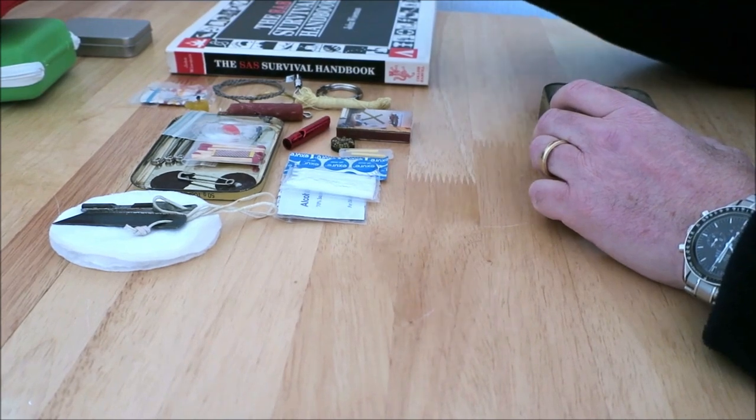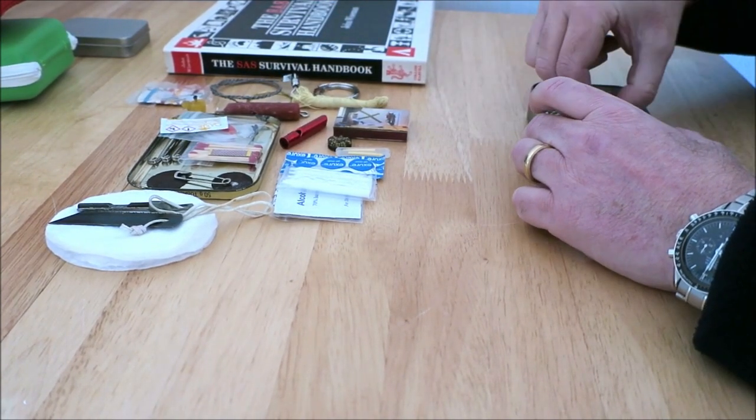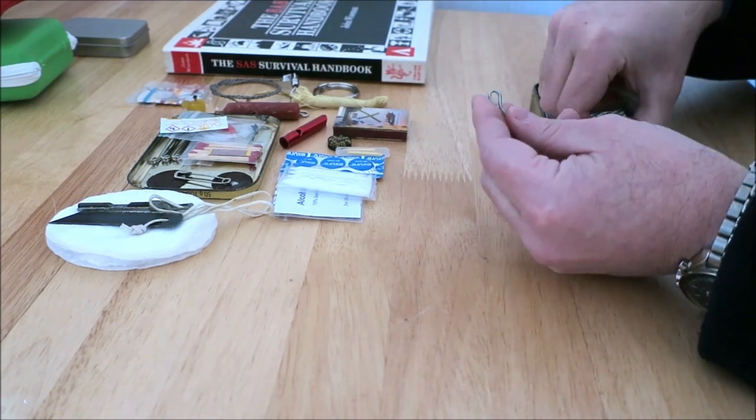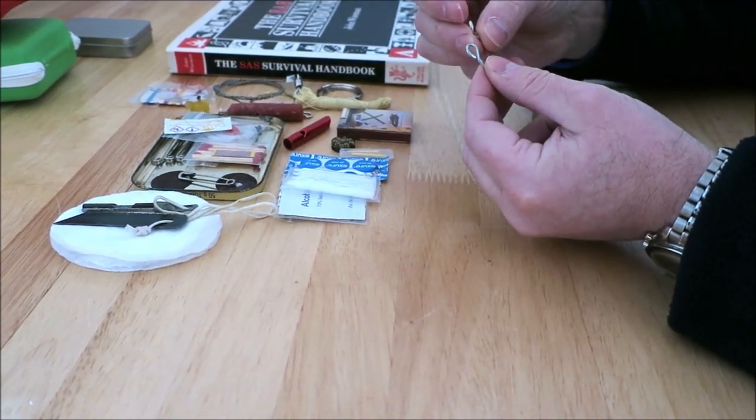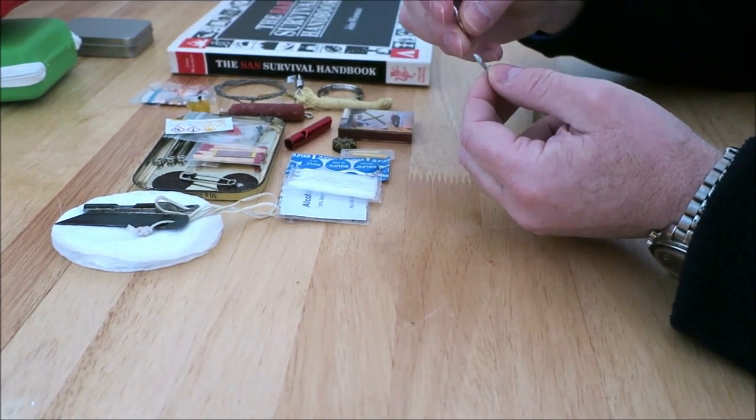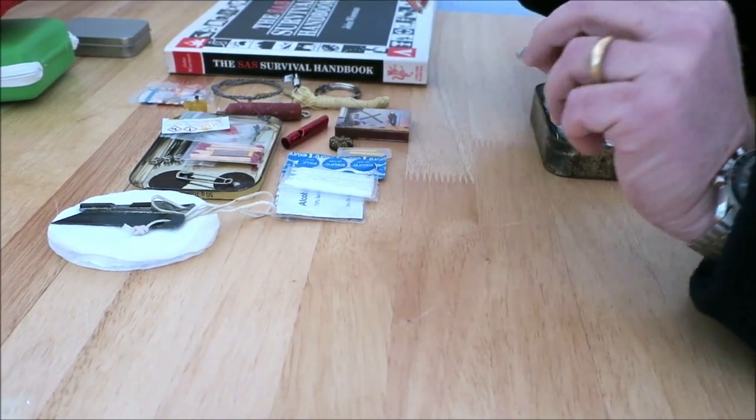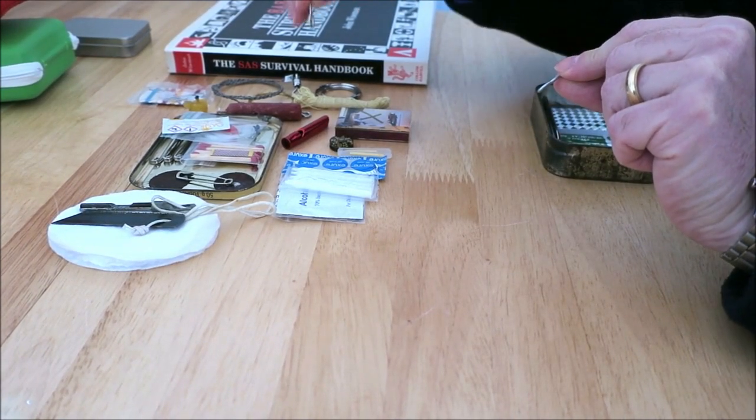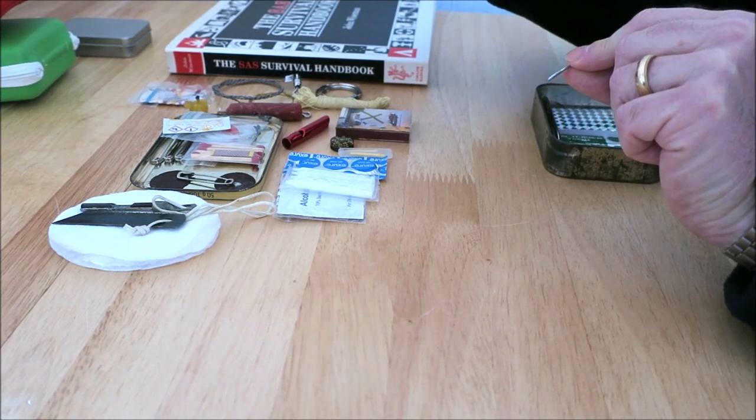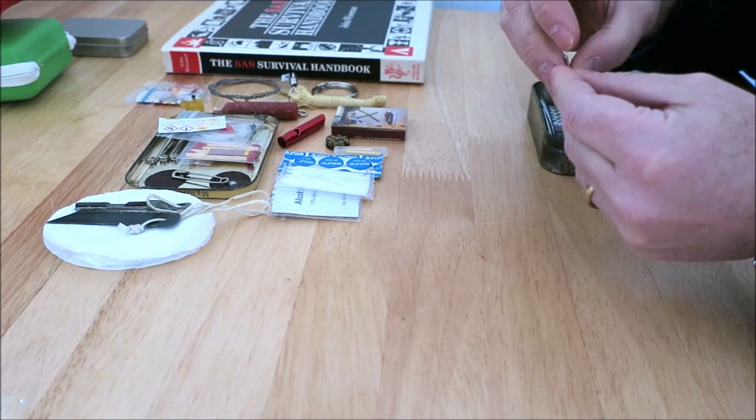Got some water purification tablets here. I've also got these two loops here, which I use for the fishing kit. If you take a big branch, for example, you can screw these into the branch here and just guide your fishing string, your fishing line through the loops here and it just keeps everything nice and stable and secure.